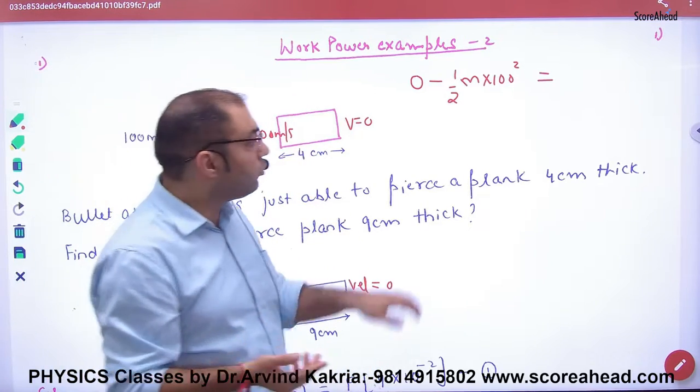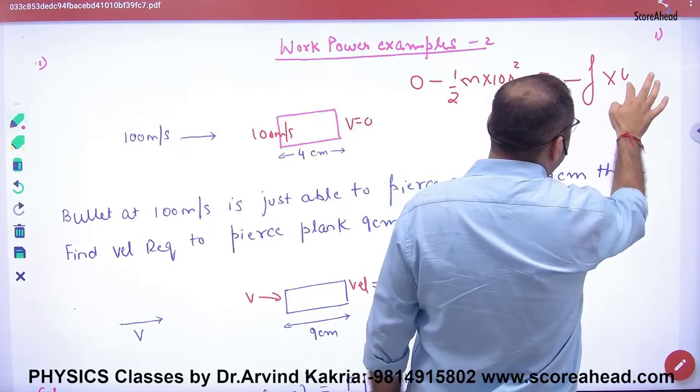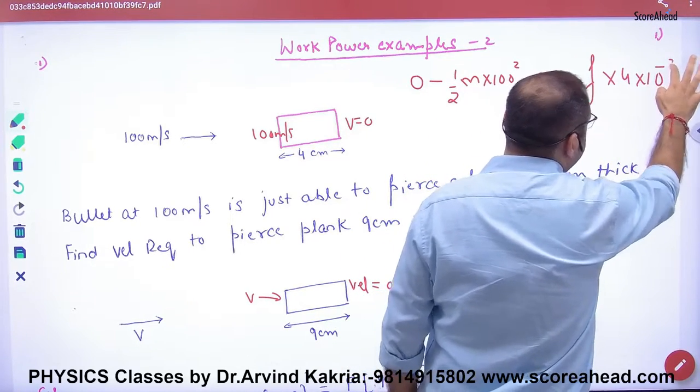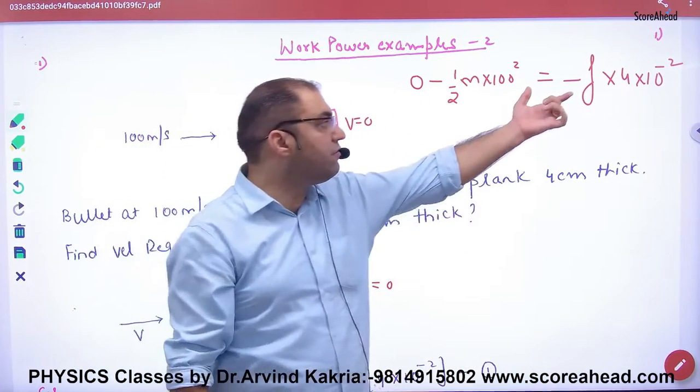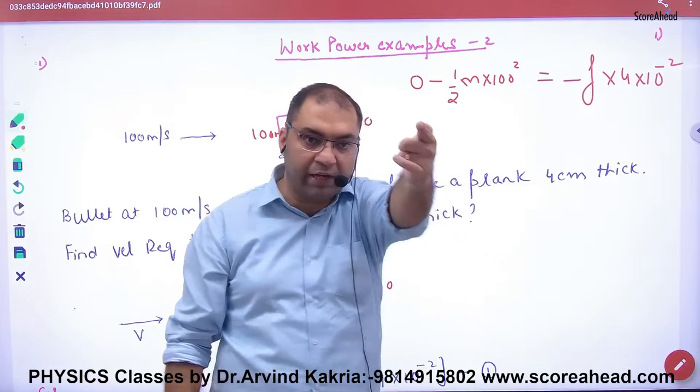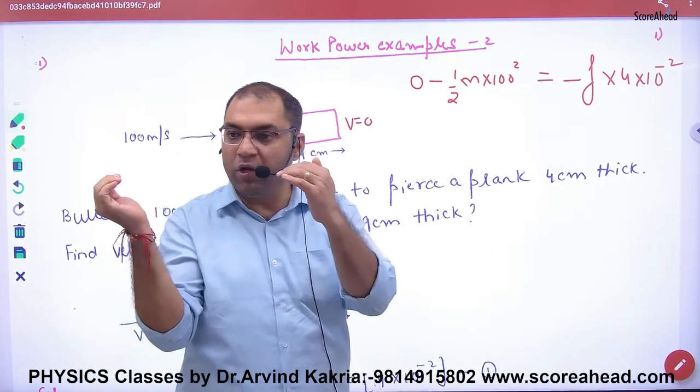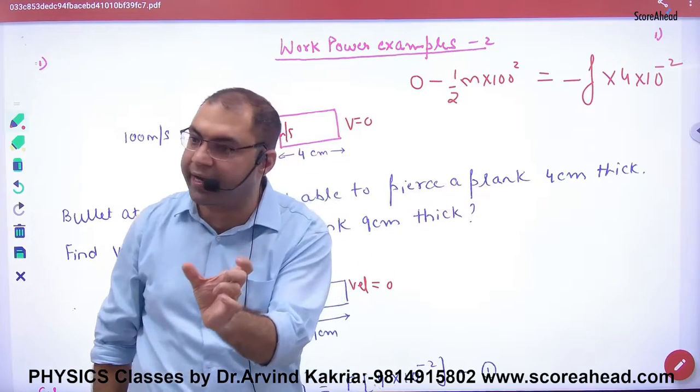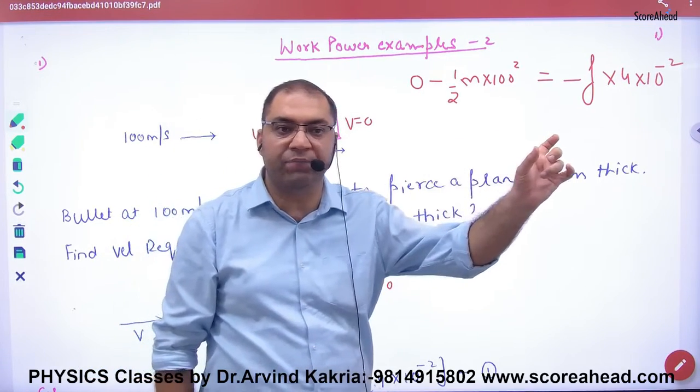Friction is working, so this kinetic energy change is work done by friction. So friction has worked over 4 centimeters distance. This is work done by friction, which is negative. So whenever the bullet enters the plank, change in kinetic energy equals the amount of work done by friction.